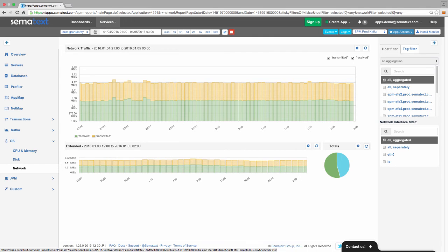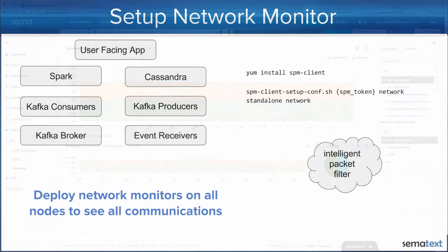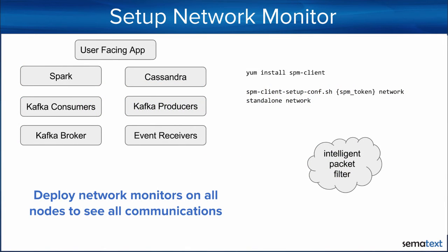Now, let's see how you can get this information for your own infrastructure. The network monitoring agent is included in the SPM client package. The best practice is to install SPM client on all your nodes in order to gain full network visibility for all the nodes. Once the SPM client is installed, you can enable and start the network monitoring agent with just a few simple commands. Within a few moments, you'll see your net map for all nodes where you enabled the SPM network monitoring agent.